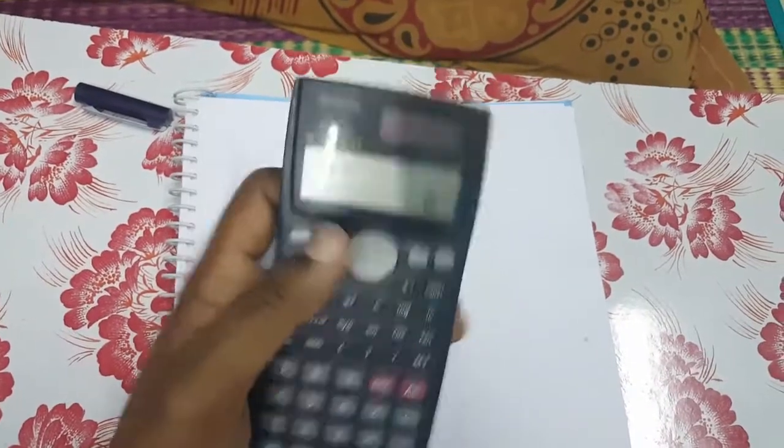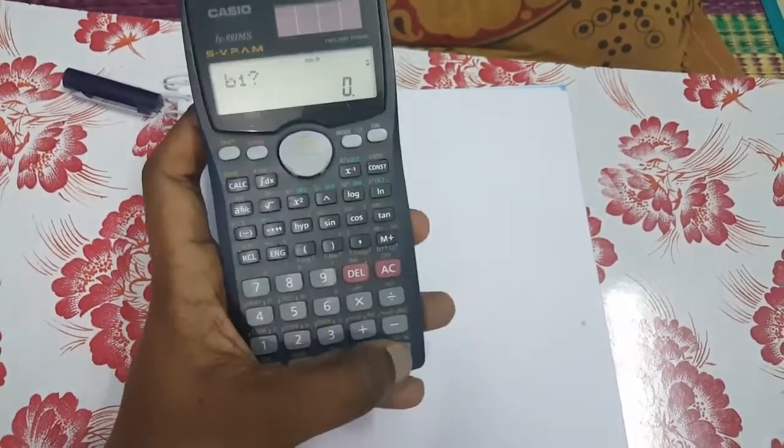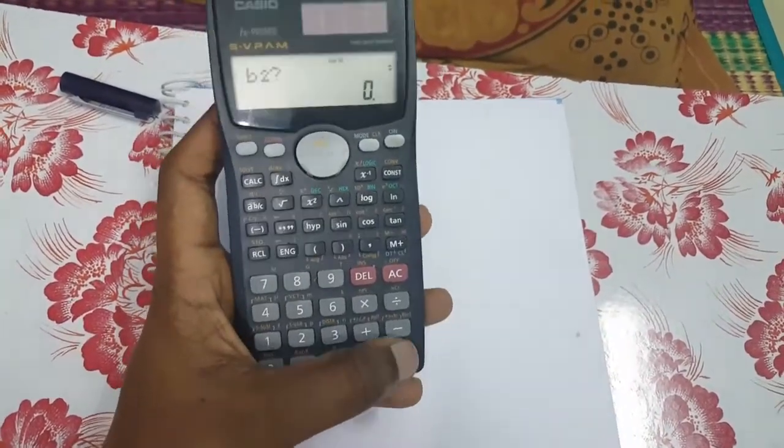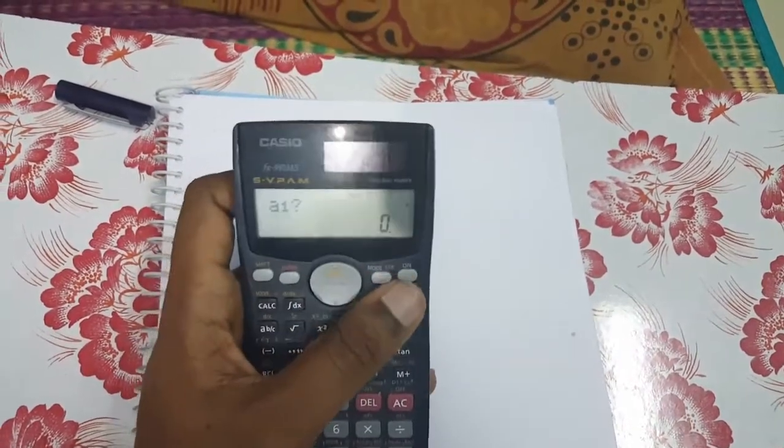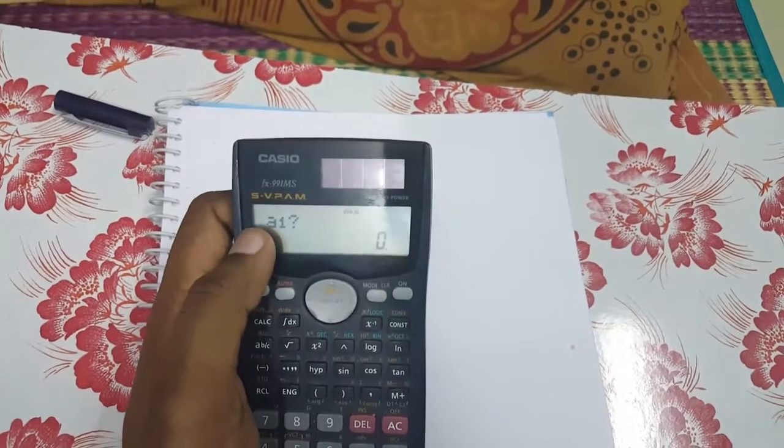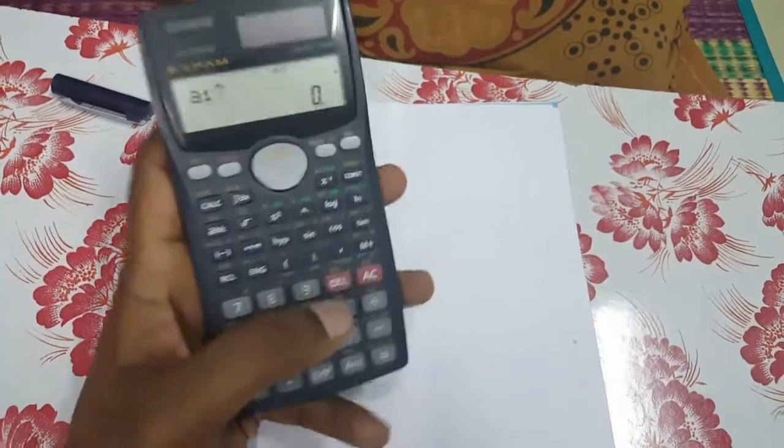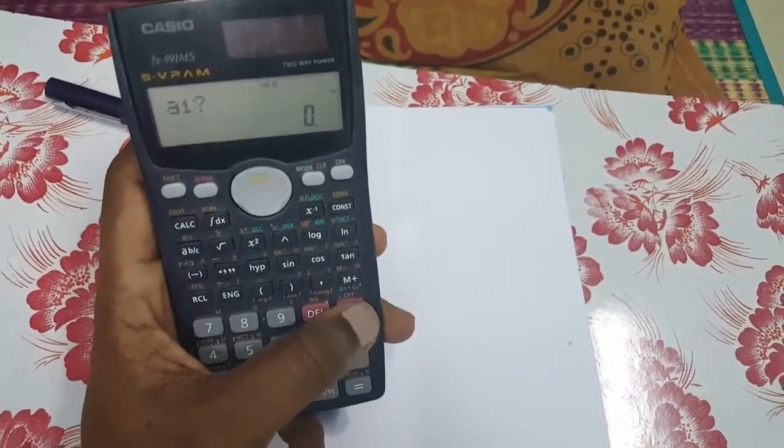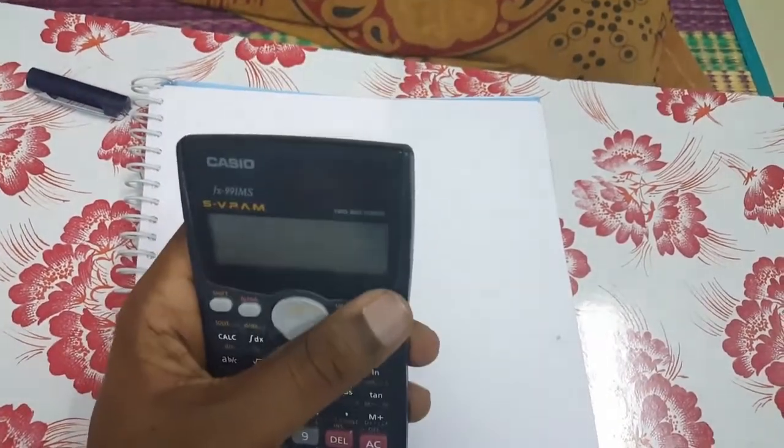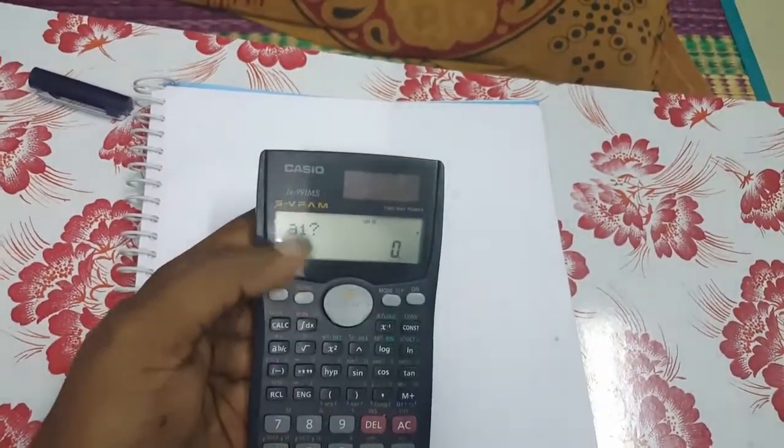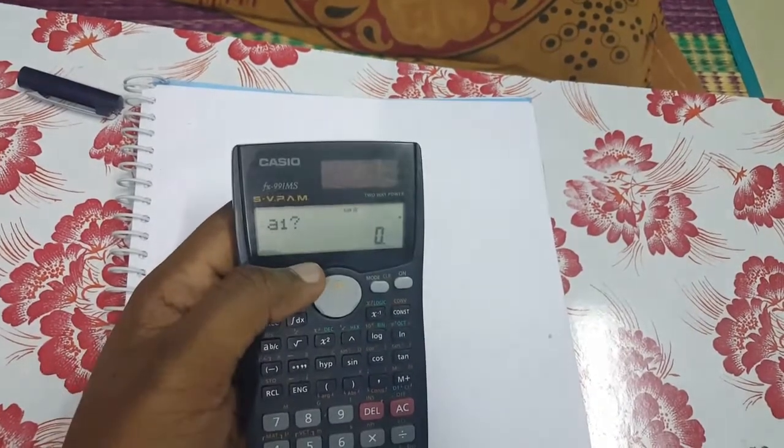After solving equation you find this kind of issue. If you press the equal to button it will not come. If you press the on button it will display a question mark. If you press the AC button it will not go. If you press shift AC and again on, then also it will not clear.